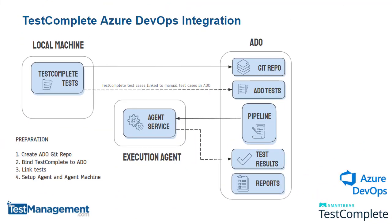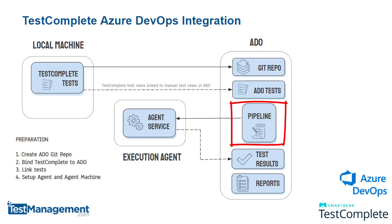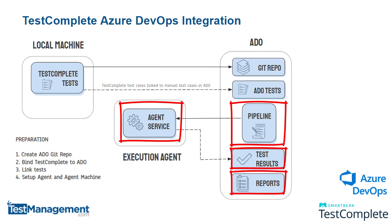To recap the overall process — there are two stages. First, the preparation stage: create the repository to contain your TestComplete project, bind TestComplete to Azure DevOps, link the tests so there's a mapping of test items in TestComplete to test cases in Azure DevOps, and set up your agent machine linked to your Azure DevOps instance. Then configure the pipeline with one test automation job containing three test steps. When the pipeline job runs on the agent machine, it runs TestExecute, picks up the test results, and feeds them back to Azure DevOps for reporting on execution progress and test status.